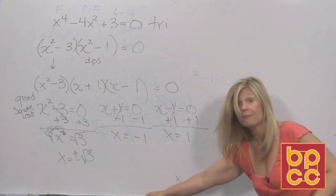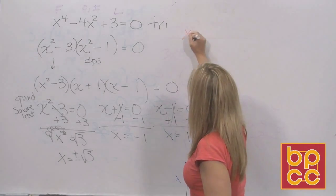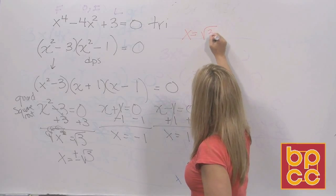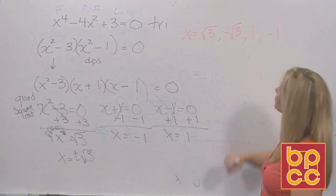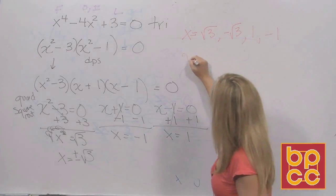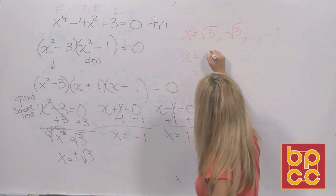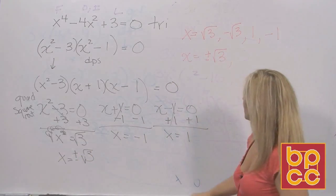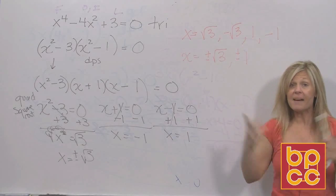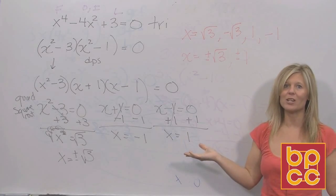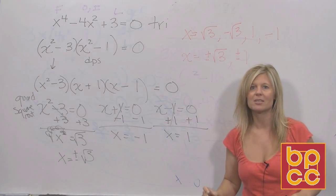Be careful when doing assignments on the computer — some want you to write each solution out separately, separated by a comma. Others will let you use the plus or minus notation: ±√3 and ±1. That's it for solving polynomial equations. In the next module, we'll learn another new equation type.